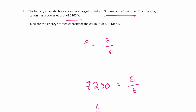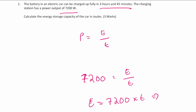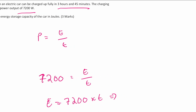What we actually want to rearrange for is the energy. If we rearrange for the energy, we get that the energy is equal to the power multiplied by the time — in this case, 7200 multiplied by time T. The next step is to put in our T. The T given in the question is 3 hours and 45 minutes.